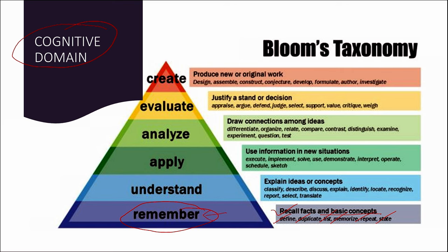Understanding the concepts — that is, the ability to explain ideas or concepts — such as classifying, describing, discussing, explaining, identifying, locating, recognizing, reporting, selecting, and translating all come under this level of learning of the cognitive domain under Bloom's taxonomy.